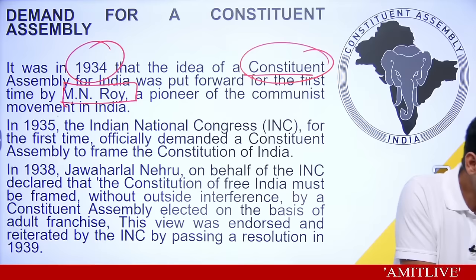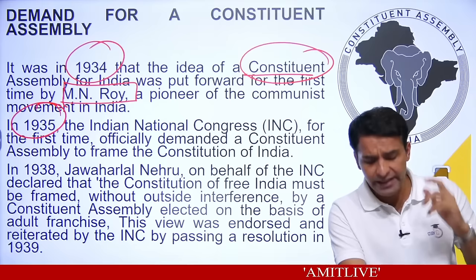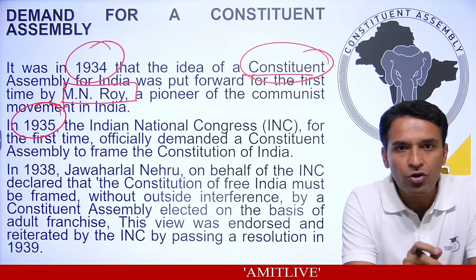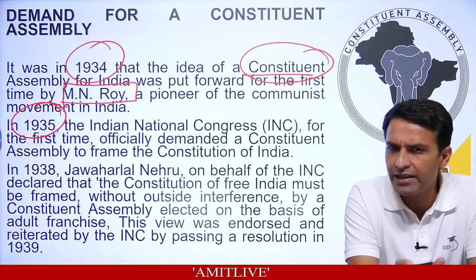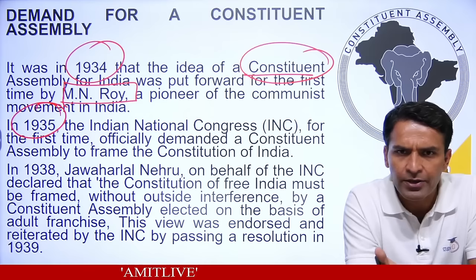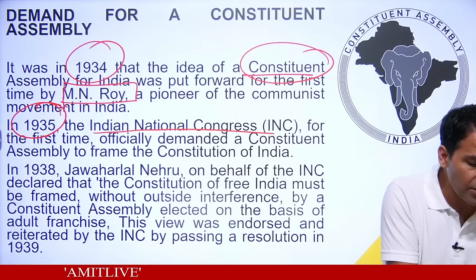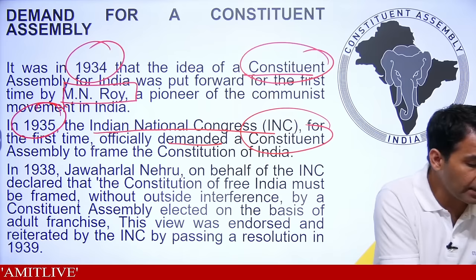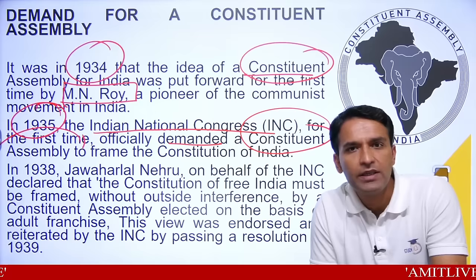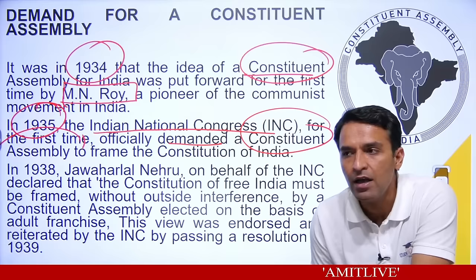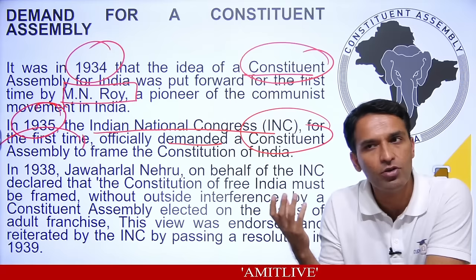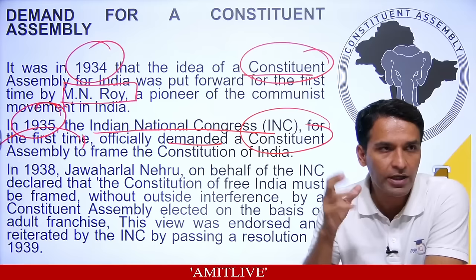In 1935, this idea was also endorsed by the Indian National Congress. The Indian National Congress officially demanded from Britishers that there should be a Constituent Assembly. We are understanding the process of how our constitution was made — the Britishers set up a Constituent Assembly in 1946, and we're looking at the background of that idea.